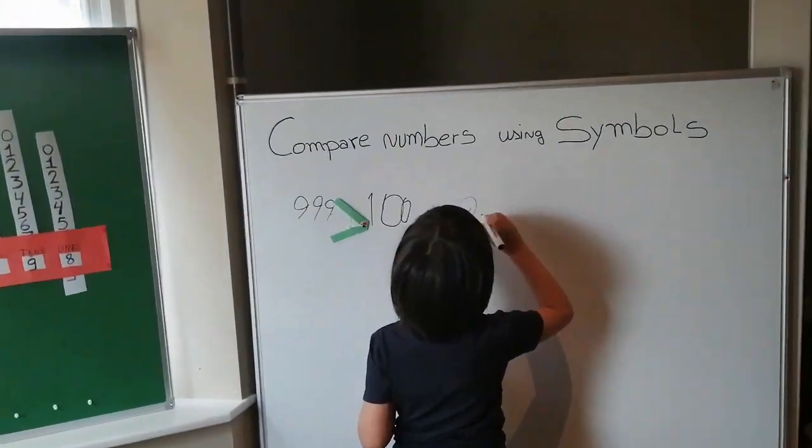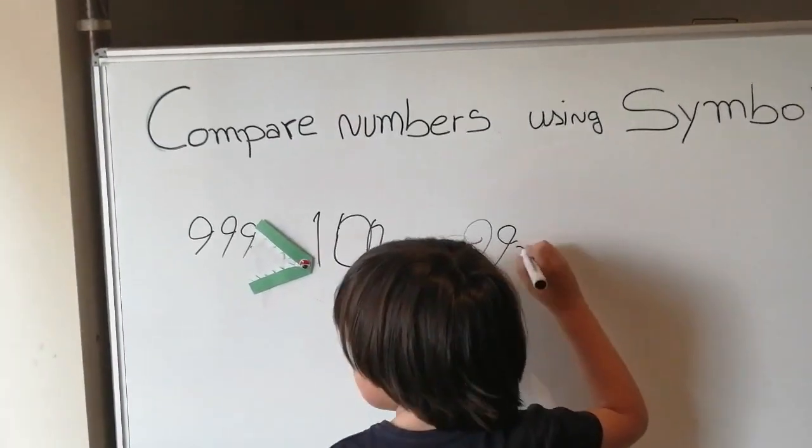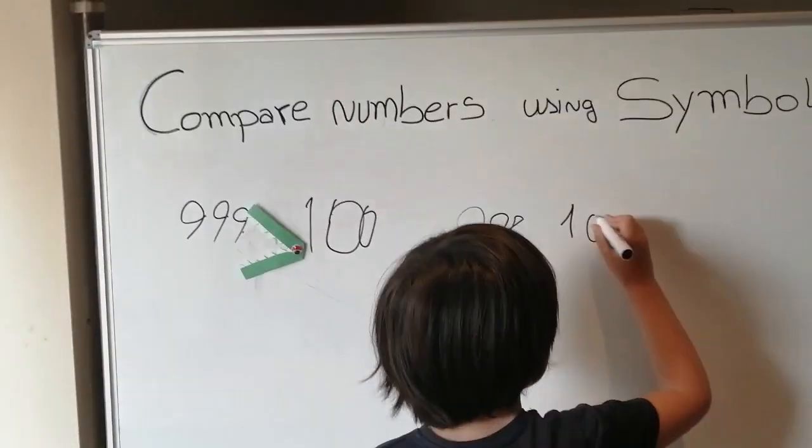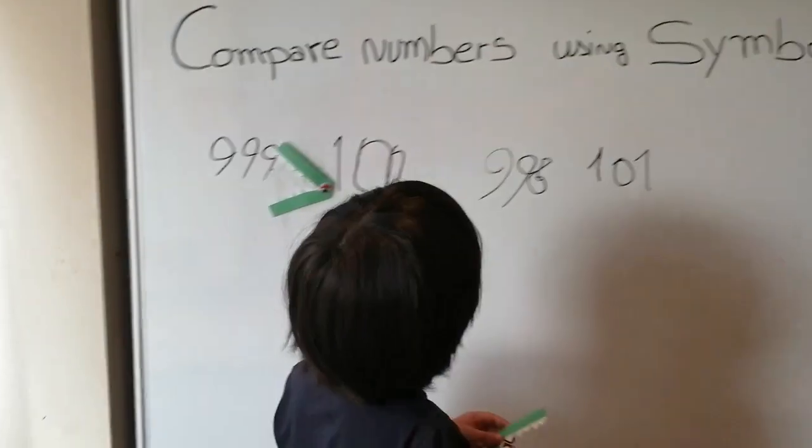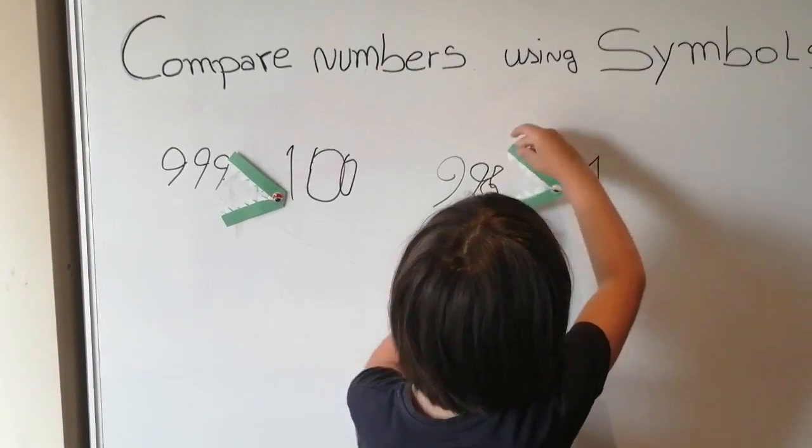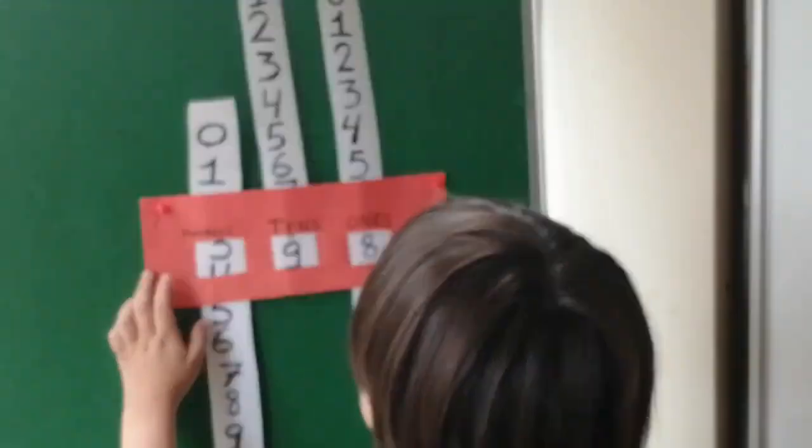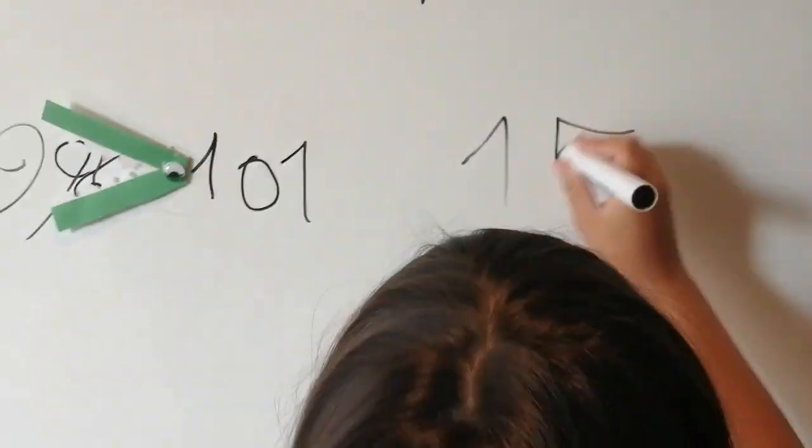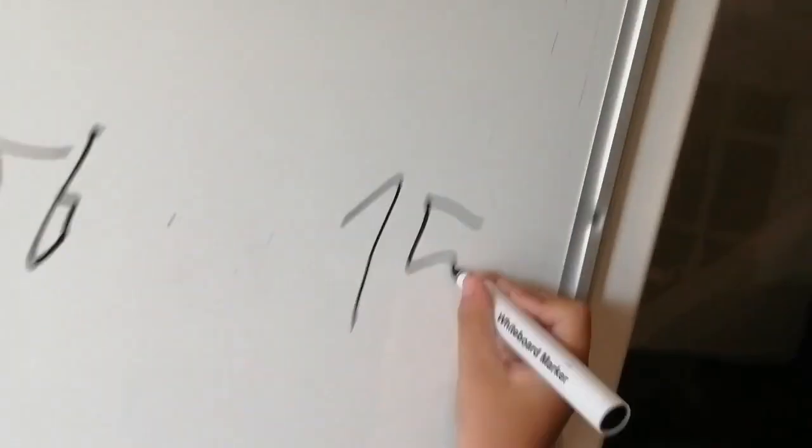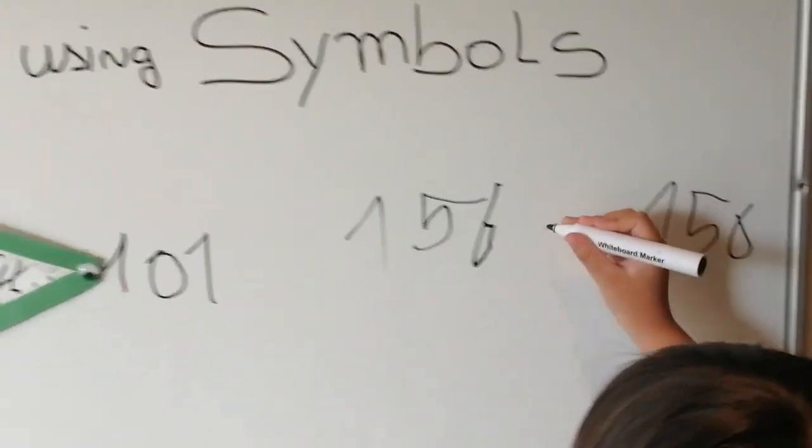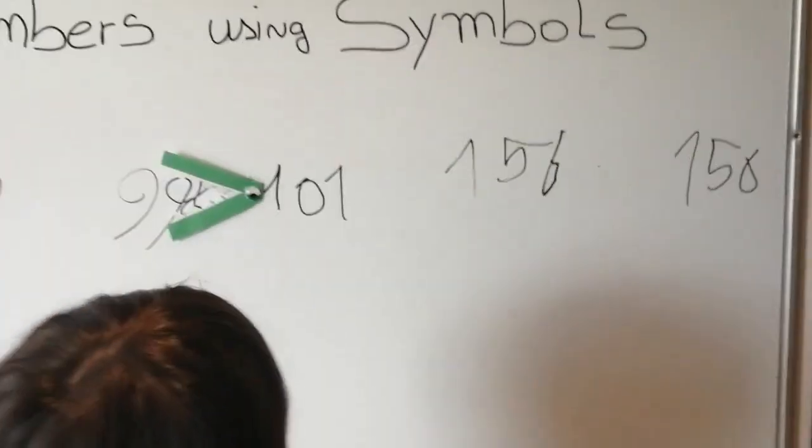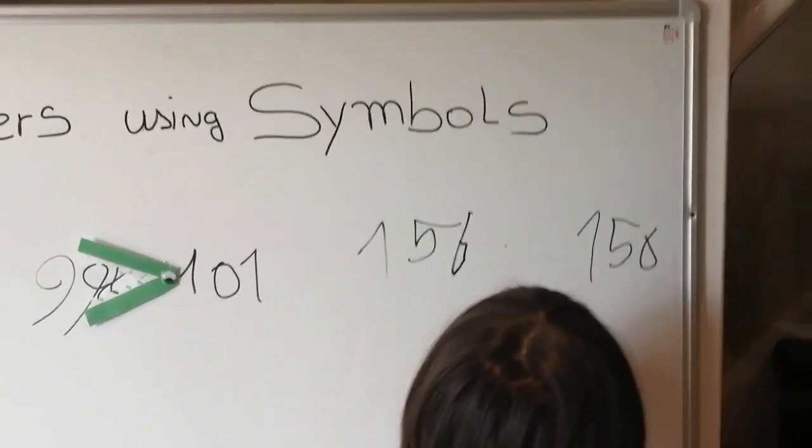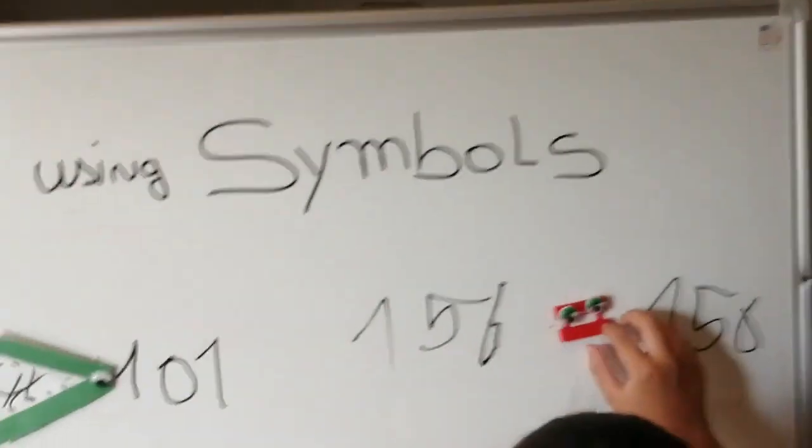The crocodile always eats the bigger numbers. One hundred and one. Nine, nine, nine. Hundred and ninety-eight, greater than a hundred and one. One hundred and fifty-six is equal to a hundred and fifty-six. Very good. Amazing.